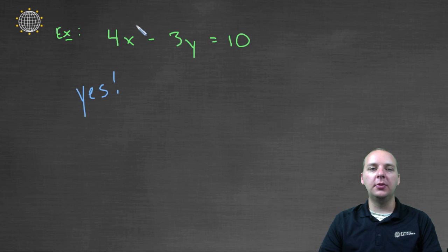It's got two variables. Exponents are one on the variables, and the variables are not in a denominator.